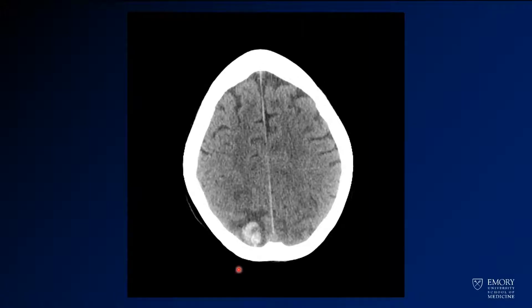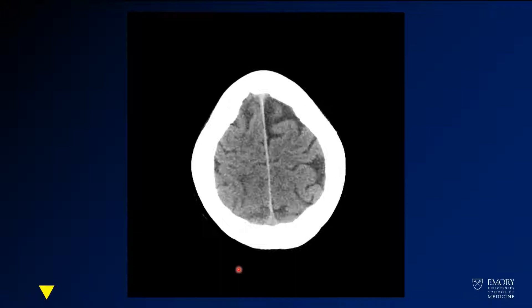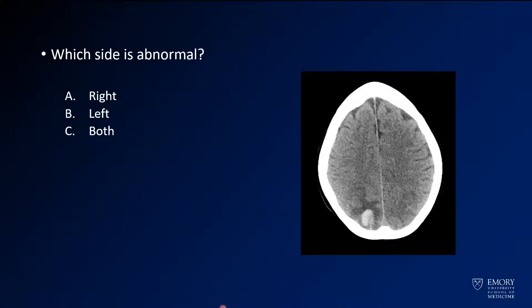Here you see it a little bit more. It's kind of peripherally located. Getting a little higher, you have again some low density. So now a question to consider: which side is abnormal here?